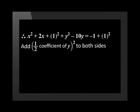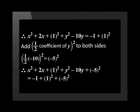Now let's do the same with y. Add half the coefficient of y, squared, to both sides of the equation. Half of negative 10, squared, equals negative 5 squared. This must be added to both sides of the equation. We now have x squared plus 2x plus 1 squared plus y squared minus 10y plus negative 5 squared equals negative 1 plus 1 squared plus negative 5 squared.